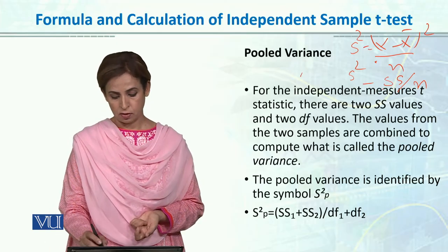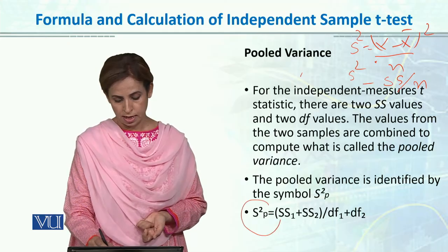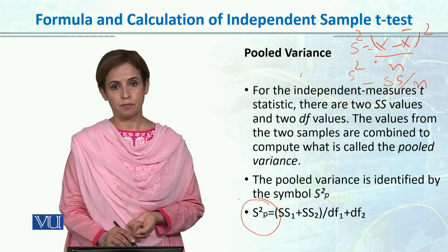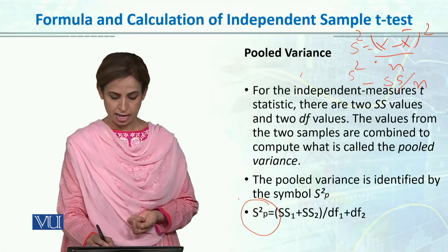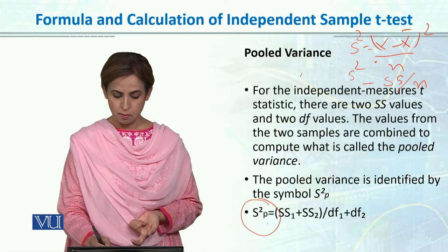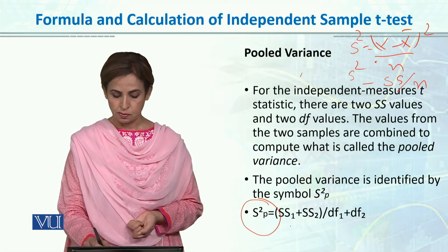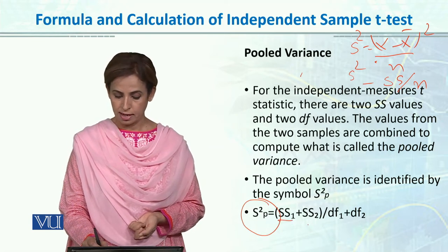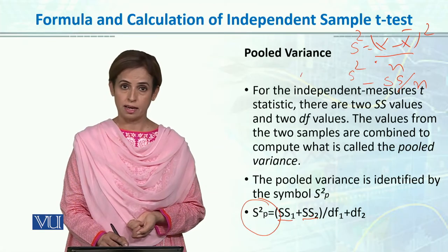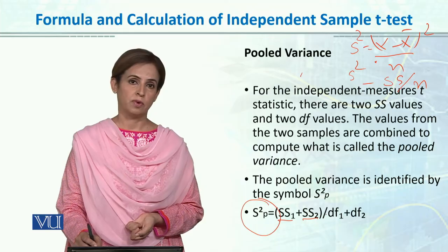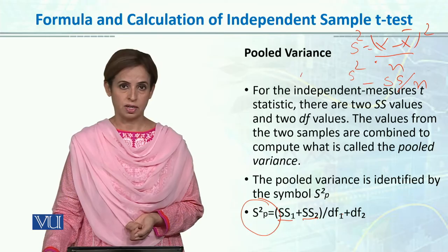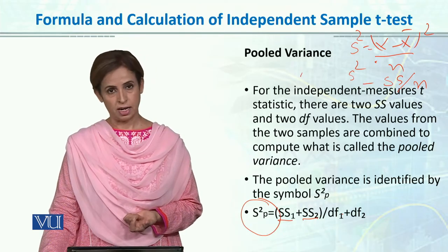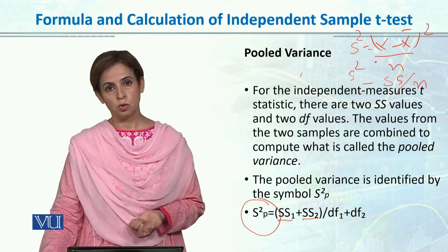For pooled variance, we denote it as s-square p, which means pooled variance. S-square is always variance, and p stands for pooled. We combine sum of squared group 1 and sum of squared group 2, and divide by degrees of freedom group 1 plus degrees of freedom group 2. This is called pooled variance.